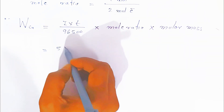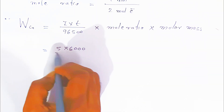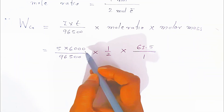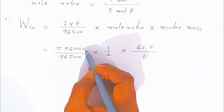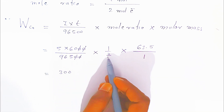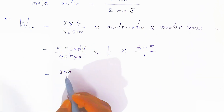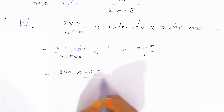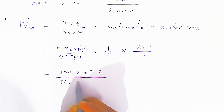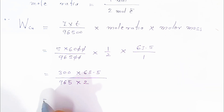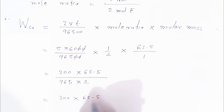Now substituting values: current is 5 ampere, time is 6000 seconds, divided by 96500, multiplied by the mole ratio 1/2, and the molar mass is 63.5. Simplifying: 5 × 6000 = 30000, this cancels to give 300 in the numerator. Multiplying through, the numerator becomes 300 × 63.5 and the denominator becomes 96500 × 2 = 193000.